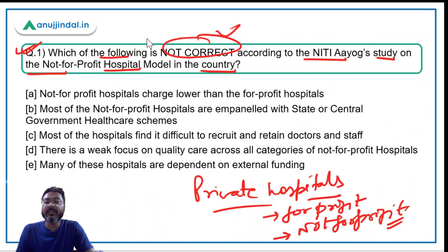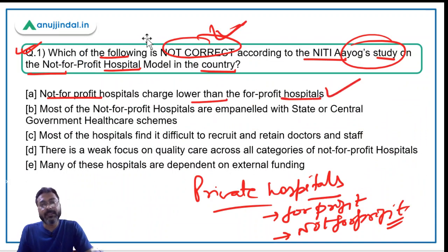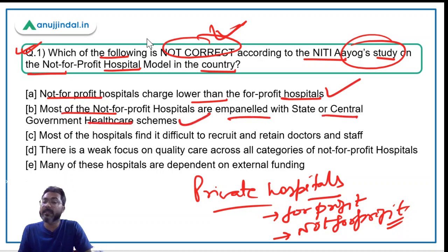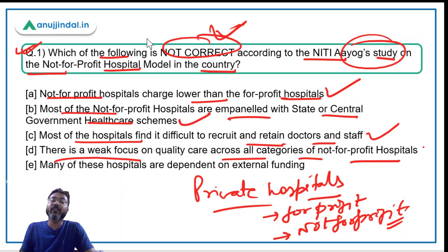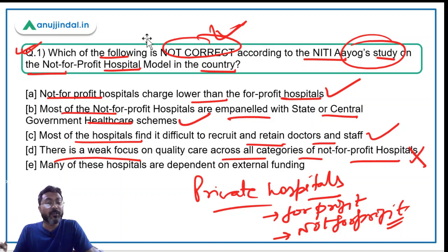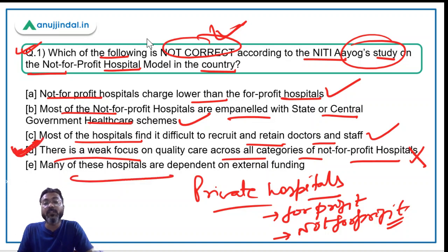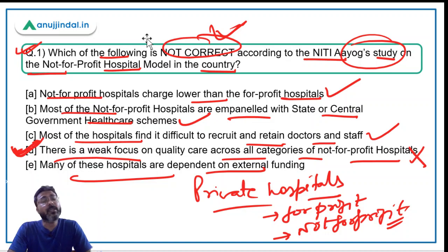Coming back to the question: not-for-profit hospitals charging lower than for-profit hospitals is correct. Most being impaneled with state or central government schemes is correct. Finding it difficult to recruit and retain doctors due to low emoluments is correct. The statement that there is a weak focus on quality care is incorrect — there is actually a strong focus on quality healthcare. Therefore Option D is the correct answer. Many of these hospitals are also dependent on external funding.